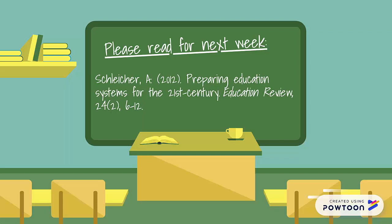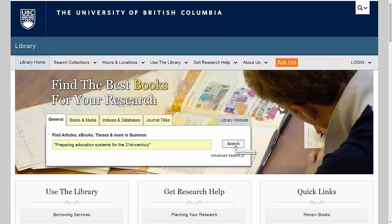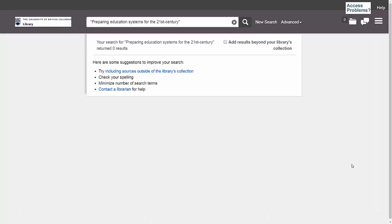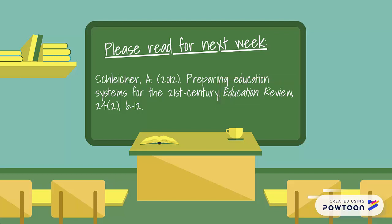Let's say I've been assigned the following reading from an instructor. When I search for that article by typing its title into the library's general search tab, it's not appearing as a result. But even though it looks like this article isn't available to me from the UBC Library, there's another way to search for journal articles that I'm going to try instead. I know from the citation that this article was published in the journal Education Review, so I'm going to find it by searching within that journal.